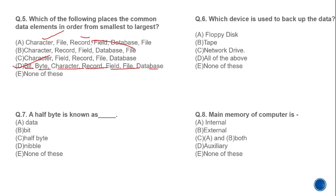MCQ 6: Which device is used to back up data? Options include floppy disk, magnetic tape, and network drive — all of these are secondary storage devices used for backup. The correct answer is all of the above.